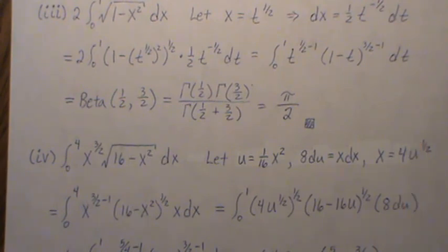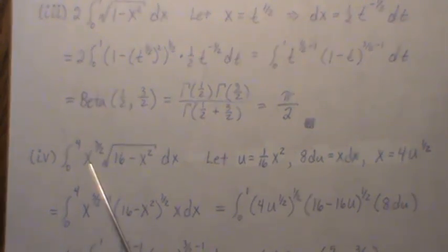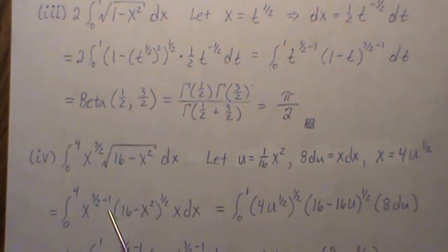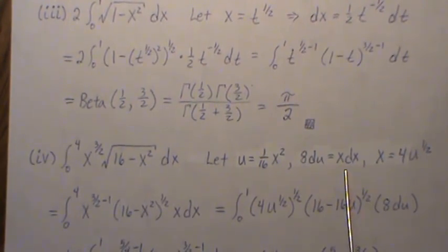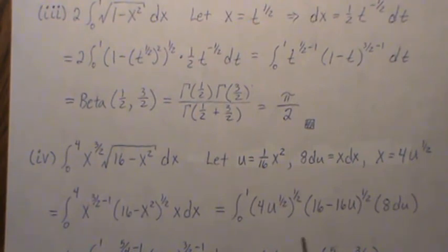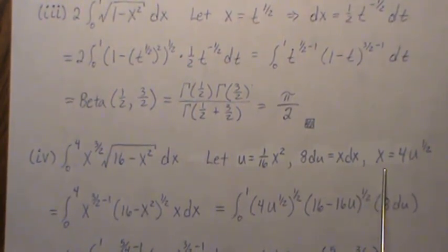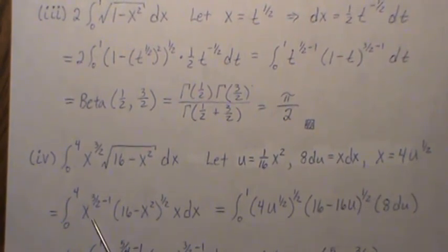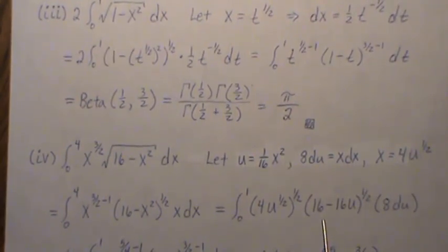We plug in what we have here, so I take out an x and move it here, and that's for this right here, so we can just substitute in 8du. And then we plug in what we have for each of these.